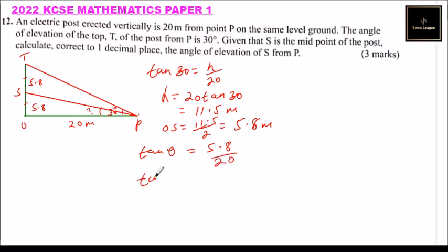So we get theta by doing this: theta is equal to tan inverse of 5.8 divided by 20. So you press tan, the inverse sign, you press tan, that will give you tan inverse. And when you're working in the calculator, you can use the bracket, and you'll be able to get the angle is 16.1 degrees.